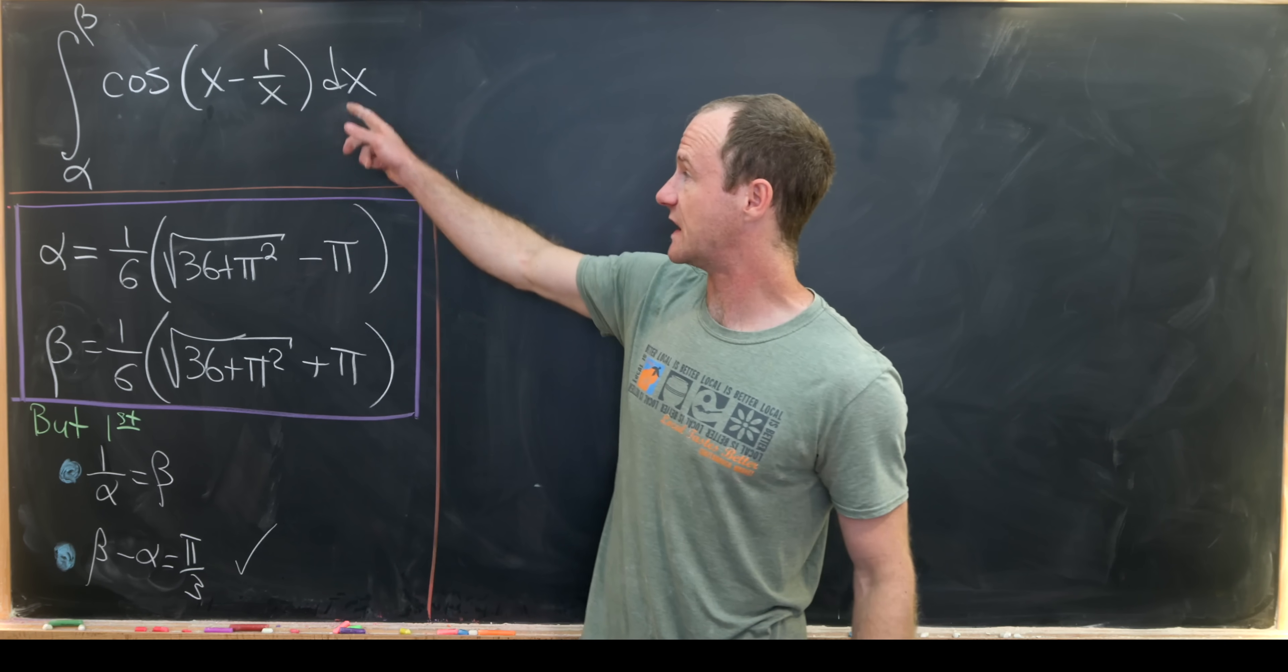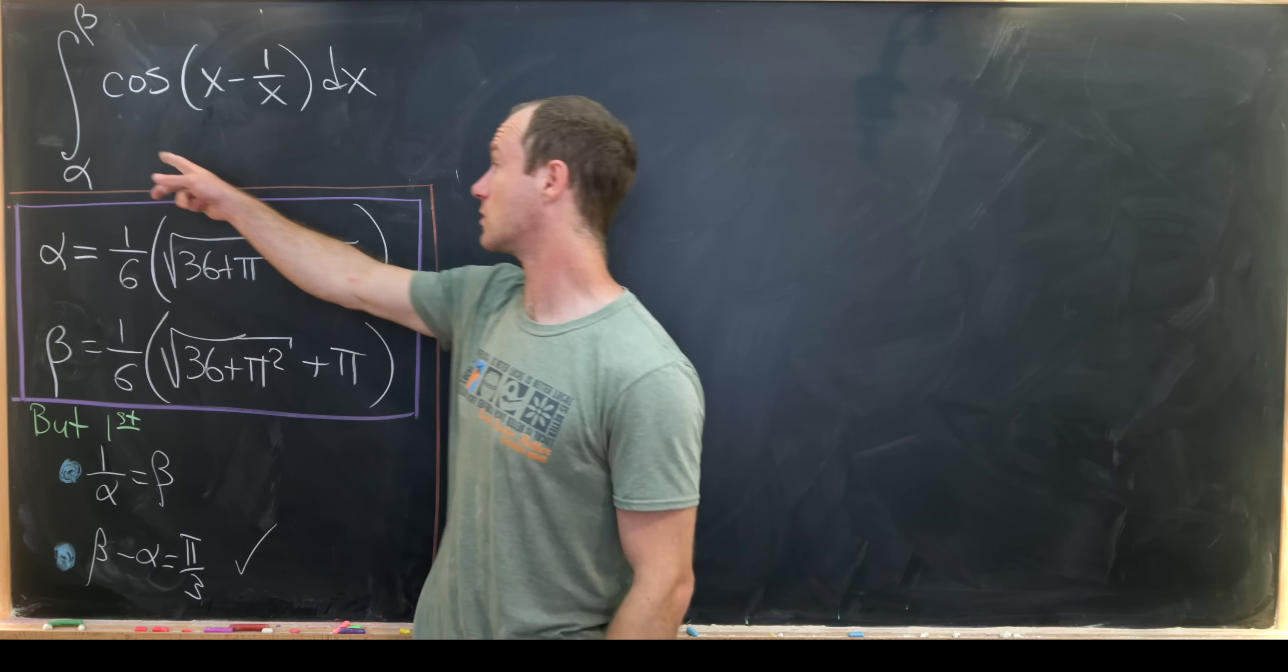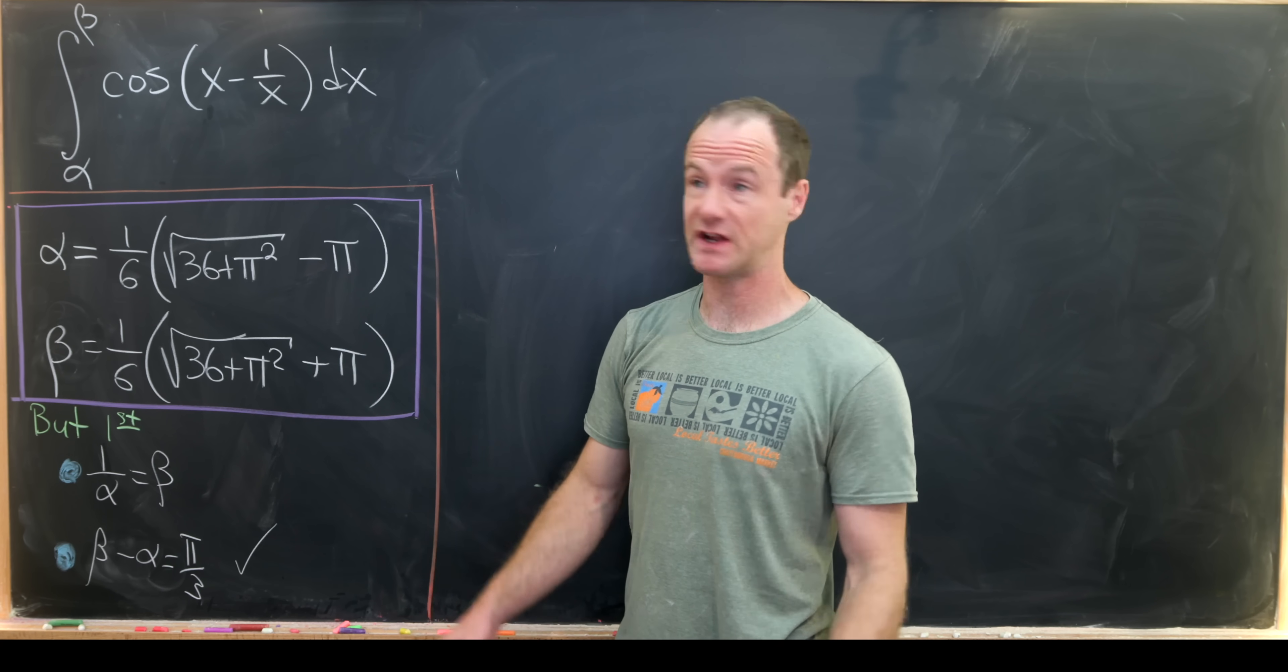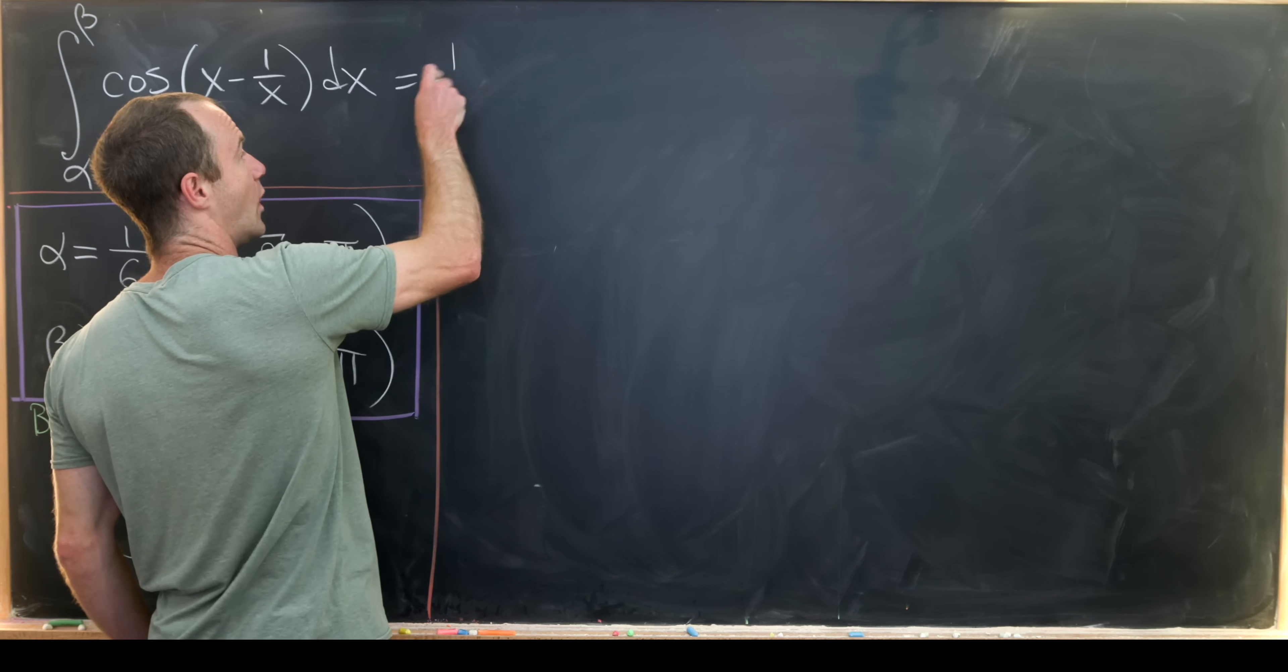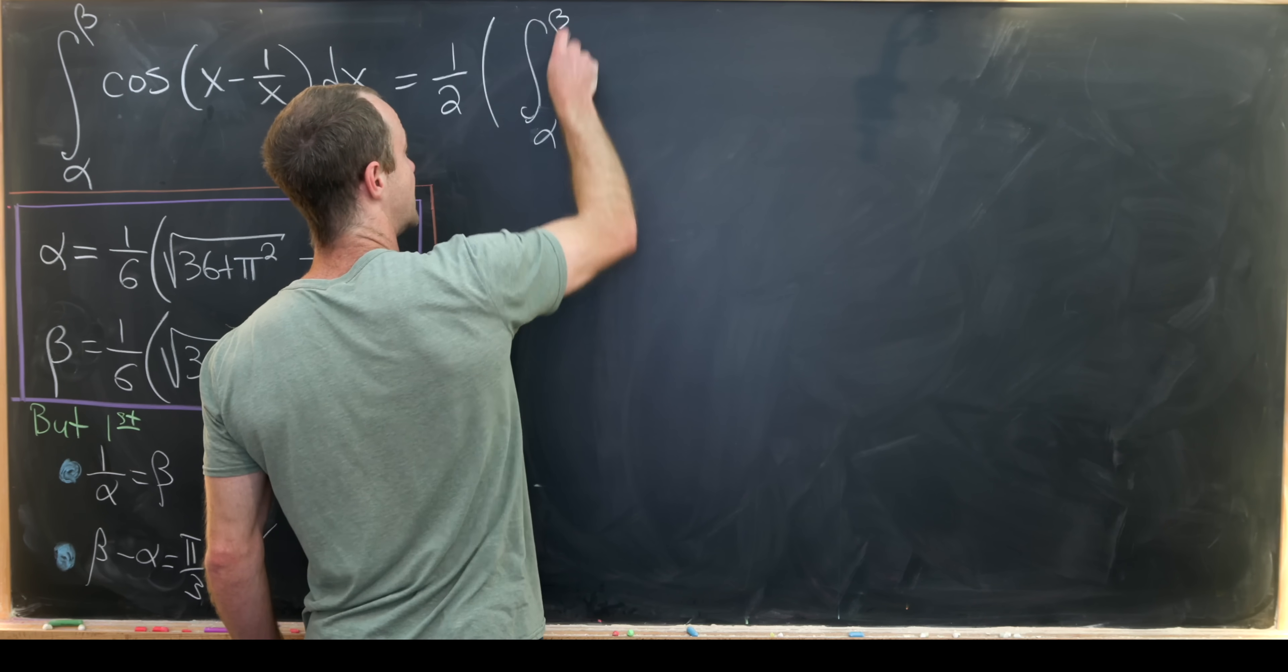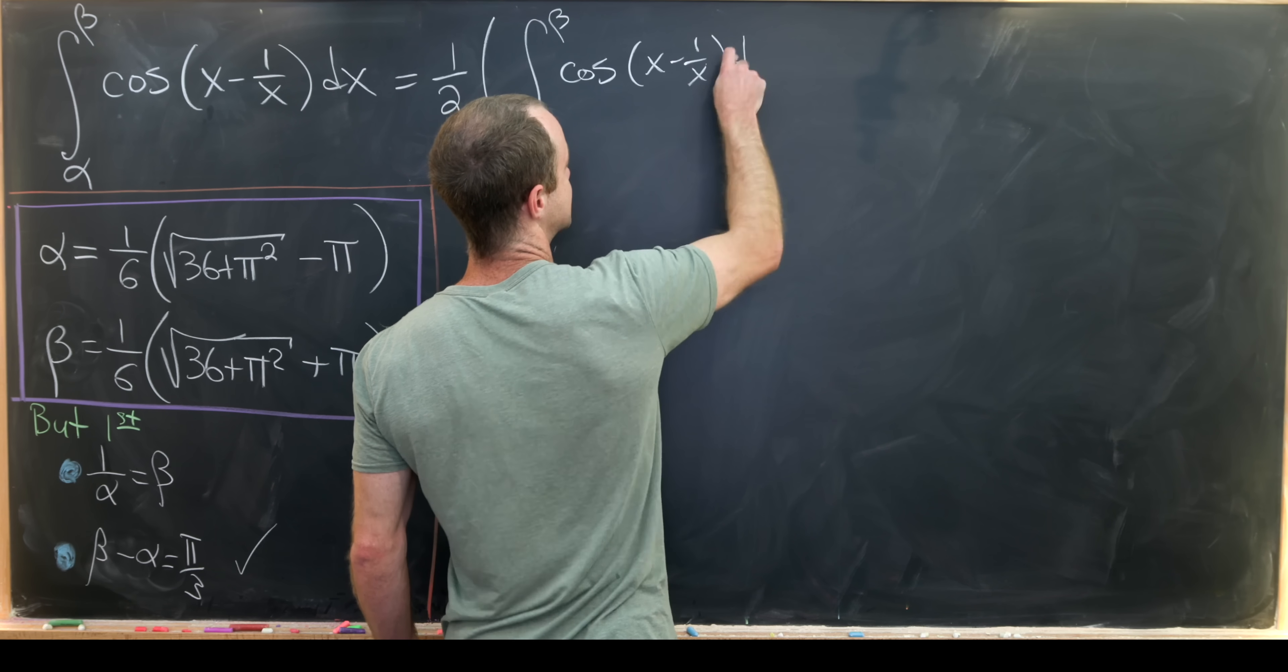So on the last board we showed that our integral right here was the same thing as the same integral with an included 1 over x squared there. And now we're going to use that to really finish off our calculation. So let's notice that this integral is equal to one half of it plus itself.